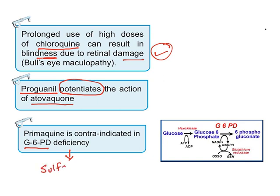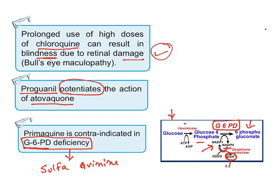Let us understand G6PD deficiency. Most sulfa drugs, quinine, and chloroquine have a problem when used in people with G6PD deficiency. Glucose in the presence of hexokinase is converted to glucose-6-phosphate, which in the presence of glucose-6-phosphate dehydrogenase is converted to 6-phosphogluconate. Importantly, this reaction generates NADPH, which is used to generate glutathione. Glutathione's job is to reduce free radical toxicity — it is a free radical scavenger that removes free radicals from the human body and protects tissues.